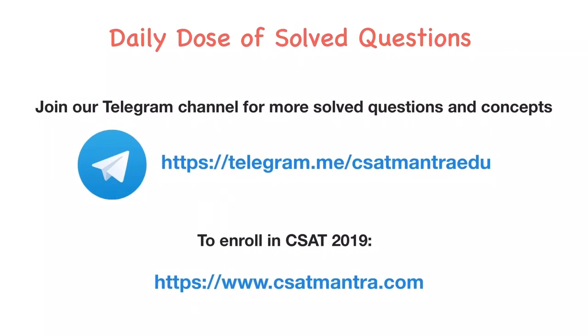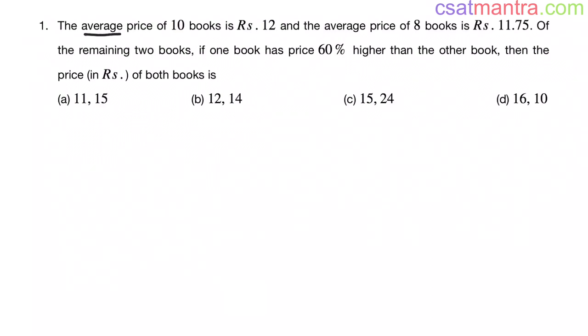The average price of 10 books is Rs. 12 and the average price of 8 books is Rs. 11.75. Of the remaining 2 books, if one book has price 60% higher than the other book, then the price in rupees of both books is?